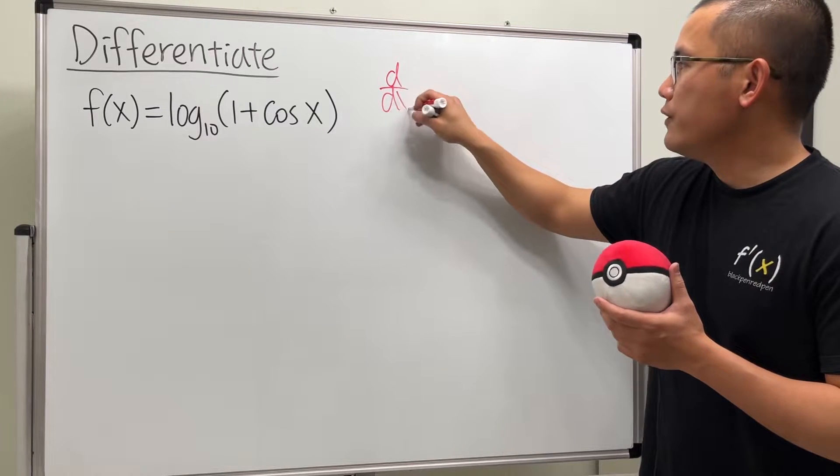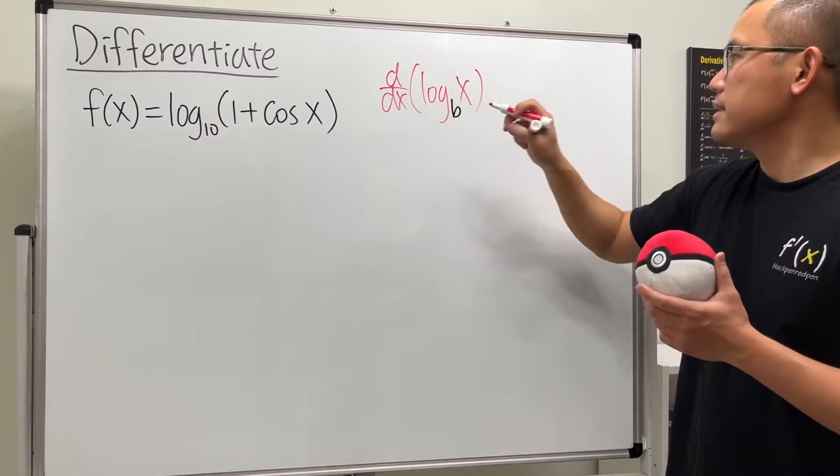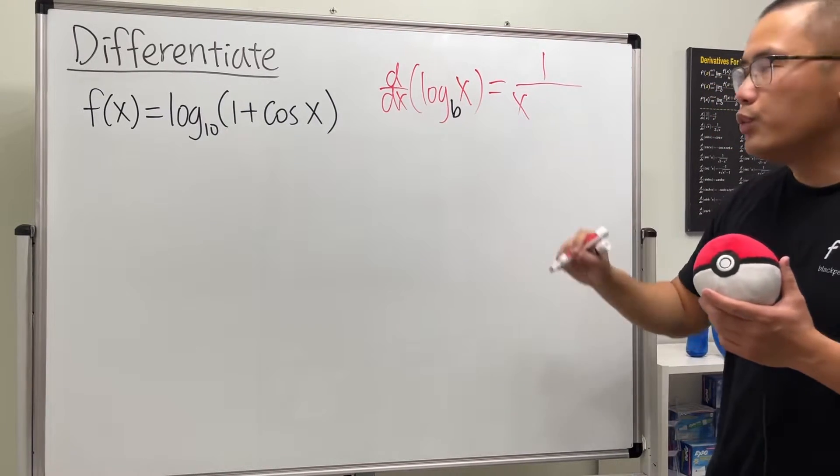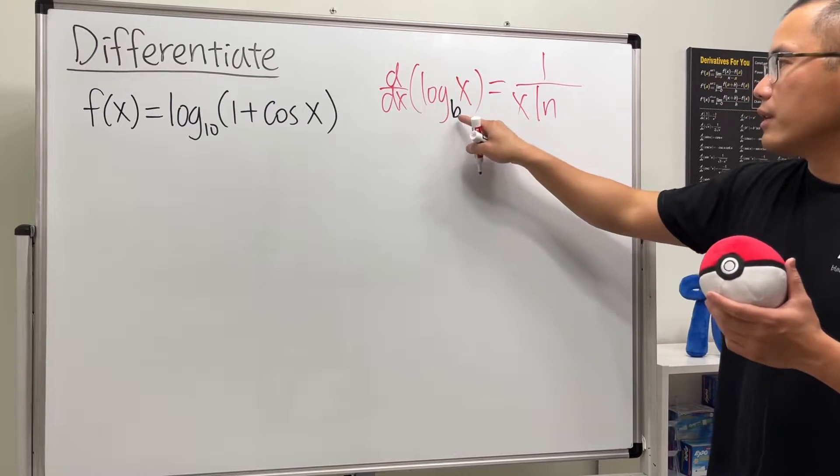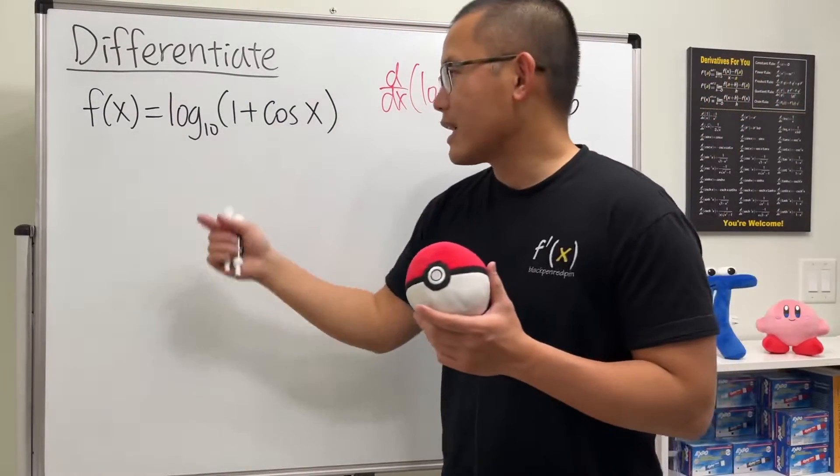When we differentiate log with some base b of x, this gives us 1 over x, but we will have to multiply by ln of the base b. So let's come back here.